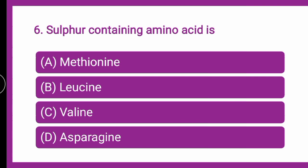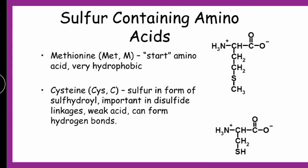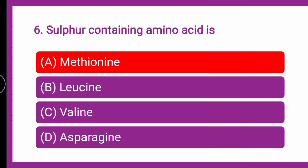Next question: the sulfur-containing amino acid is — whether it is methionine, leucine, valine, or asparticine. In amino acids, there are a few that contain sulfur. The sulfur-containing amino acids are methionine and cysteine — 'cys' for sulfur. These contain sulfur in their structure. So the correct answer is methionine.